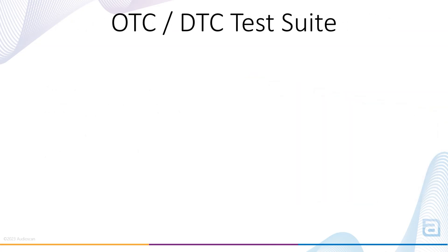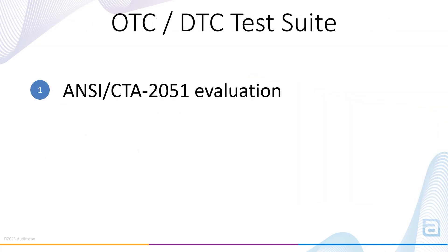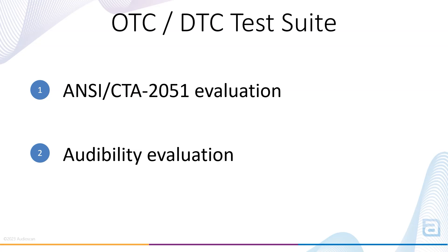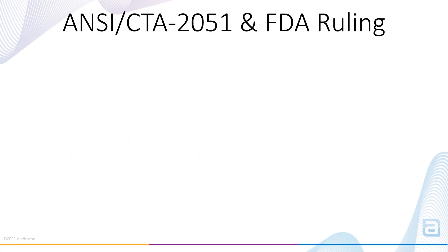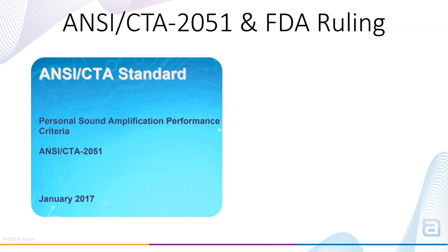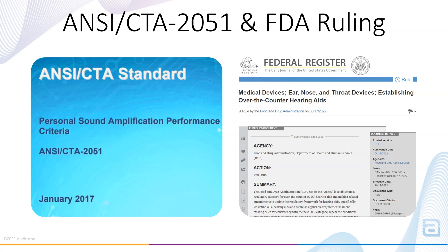The test suite consists of two tests: NC-CTA 2051 evaluation and audibility evaluation. Measurements in the NC-CTA 2051 evaluation are primarily derived from the NC-CTA 2051-2017 standard. In October 2022, the FDA made a ruling establishing over-the-counter hearing aids, specifying tests and criteria that devices must meet to be sold as OTC hearing aids. The ruling also draws on ANSI S3.22 for hearing aids; however, the NC-CTA standard is the main source for the tests and criteria.